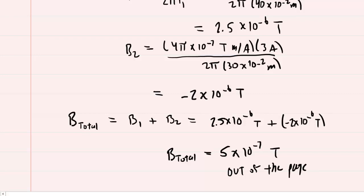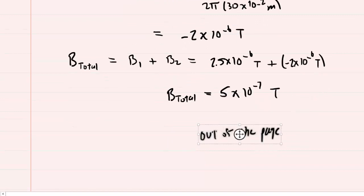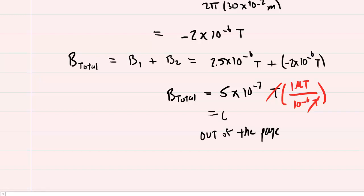If you need to convert that into microtesla, remember that 1 microtesla is equivalent to 10 to the minus 6 tesla. When you multiply by that conversion factor, the tesla units cancel, and you would be left with 0.5 microtesla. That would be an equivalent answer as well. Again, the direction is out of the page. So that completes part A of this question.